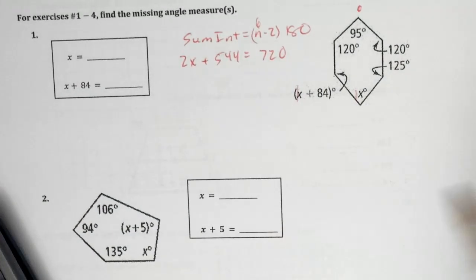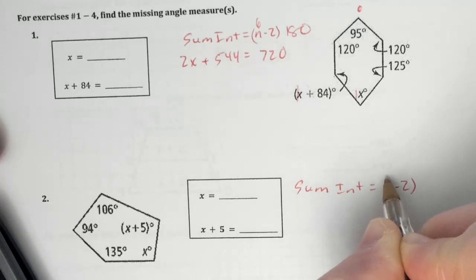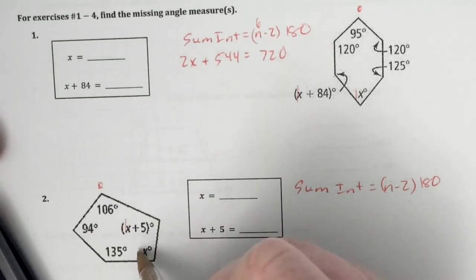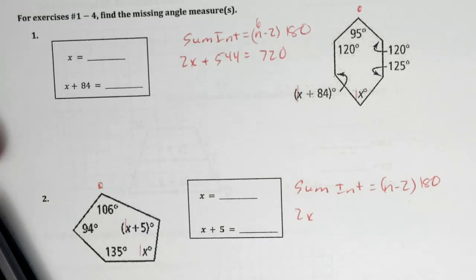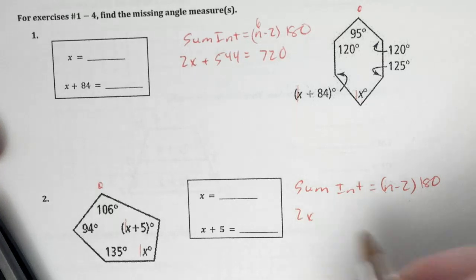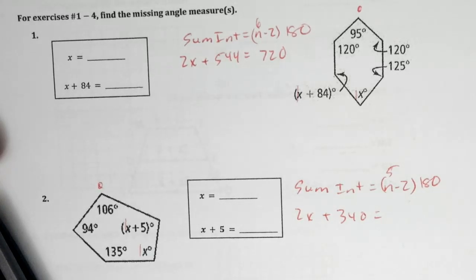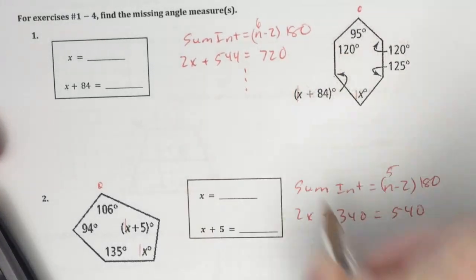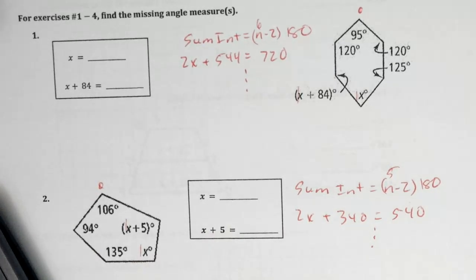This one, same idea — just rinse and repeat. Sum of the interior equals N minus 2 times 180. Going in a circle: I have 1x and then a second x, so 2x, and then the constants 106, 135, 94, giving 340. So 2x plus 340 equals N sides — you have 5. So 5 minus 2 times 180 equals 540. Then you would find what x is and plug in to figure out your final answer.